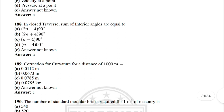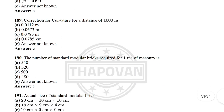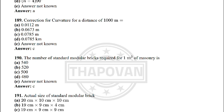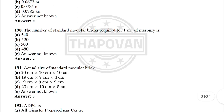Next: in a closed traverse, the sum of the interior angles is equal to — the correct answer is option A: (2n − 4) × 90°. Next: correction for curvature at a distance of 1000 metres — the correct answer is option C: 0.0785 m.